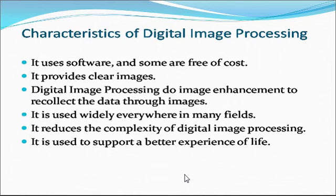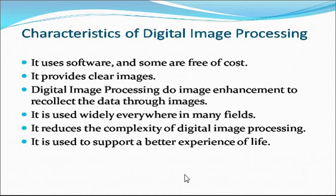There are different types of images. The types include binary image, black and white image, 8-bit color format, and 16-bit color format. Regarding binary images, a binary image contains only two pixel values: 0 and 1, where 0 refers to black and 1 refers to white. The second type is black and white image, where the image consists of only black or white color.